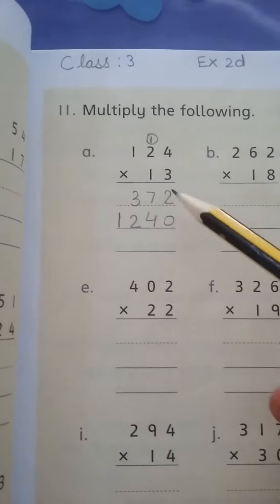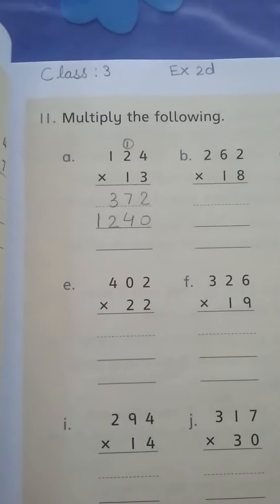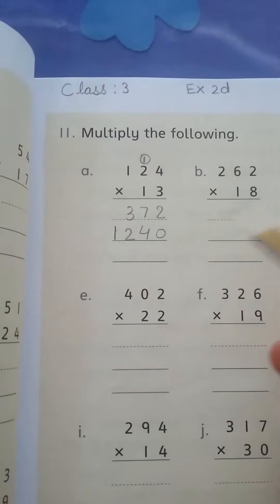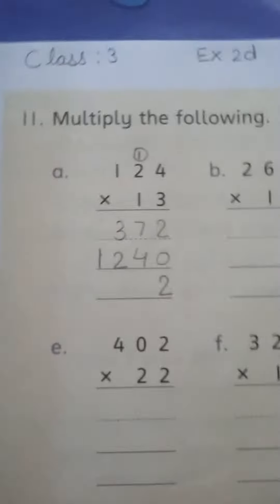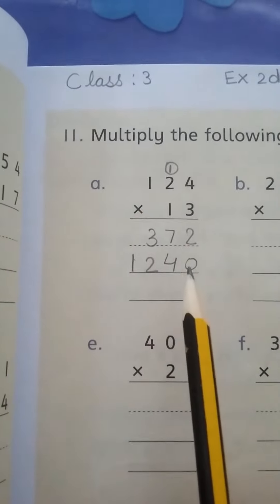Now we will add these numbers. Two plus zero is two, seven plus four is eleven.